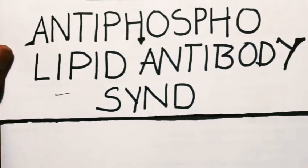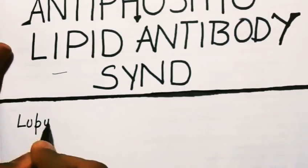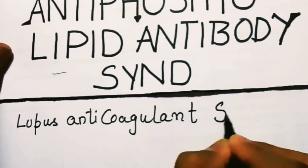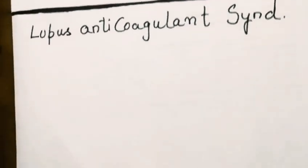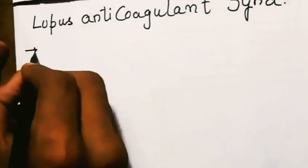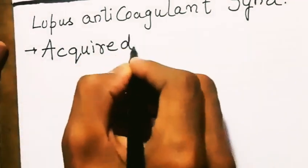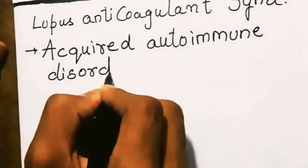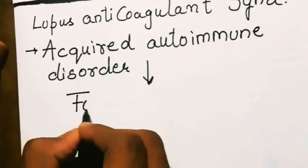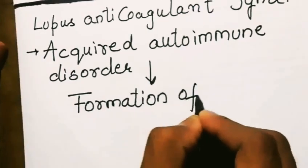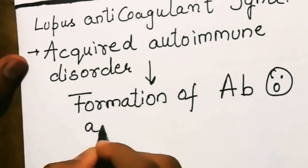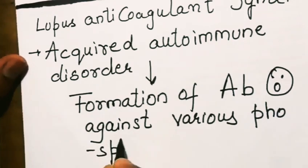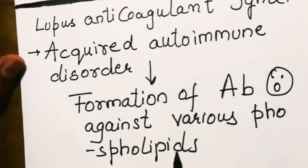Antiphospholipid antibody syndrome, also called lupus anticoagulant syndrome. It is an acquired autoimmune disorder due to formation of antibodies against various phospholipids, which we will encounter in further lectures.